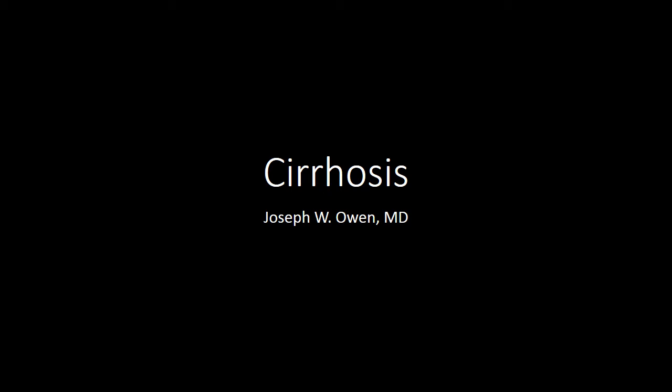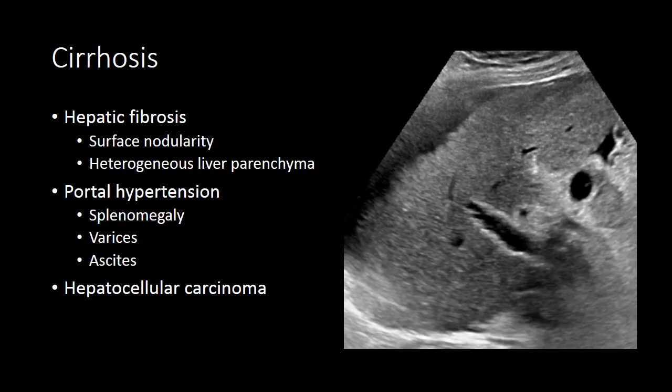In this podcast, I will discuss the imaging manifestations of cirrhosis and its complications. Cirrhosis is the result of hepatic fibrosis, and on imaging we typically see surface nodularity and a heterogeneous liver parenchyma. Cirrhosis can result in portal hypertension due to increasing resistance to portal vein blood flow.